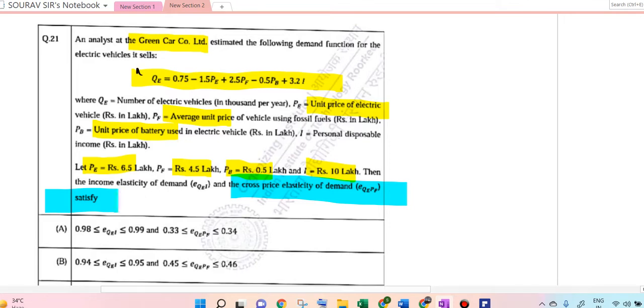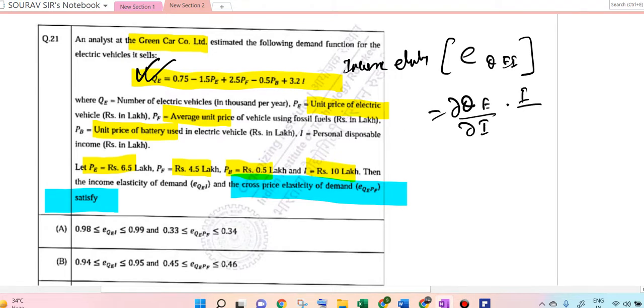So PE equals 6.5, now calculate income elasticity. E of θE with respect to I. We put the values into the formula.